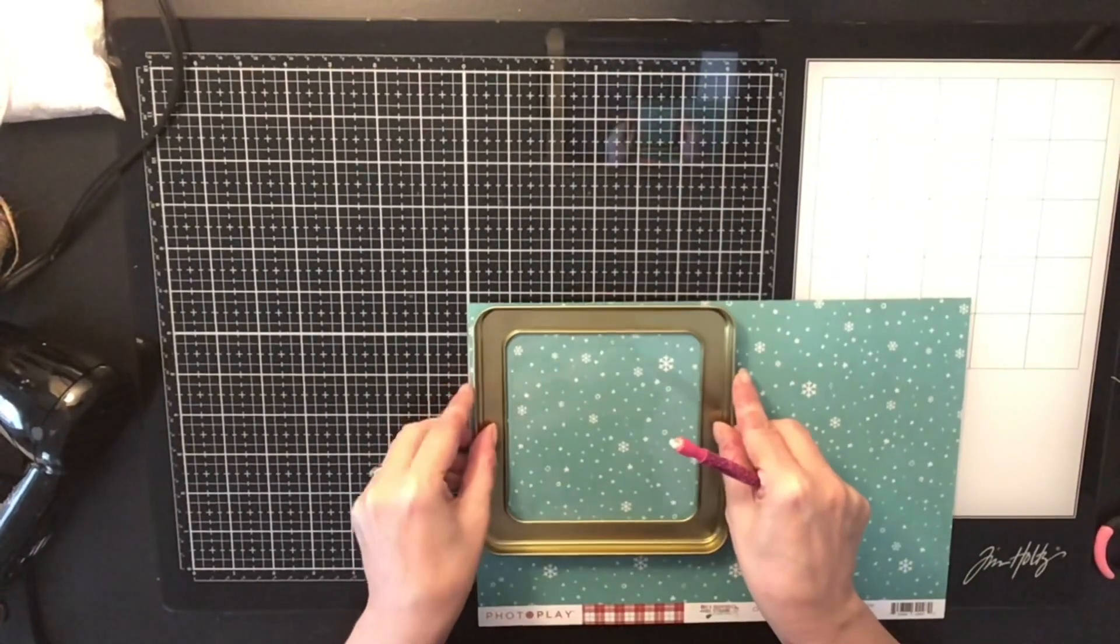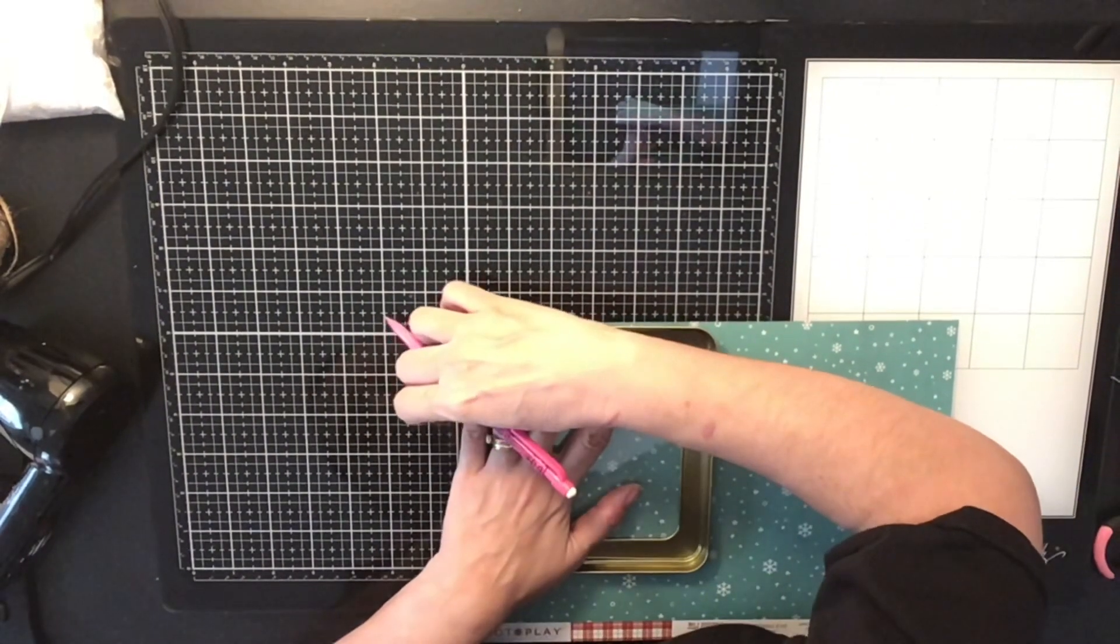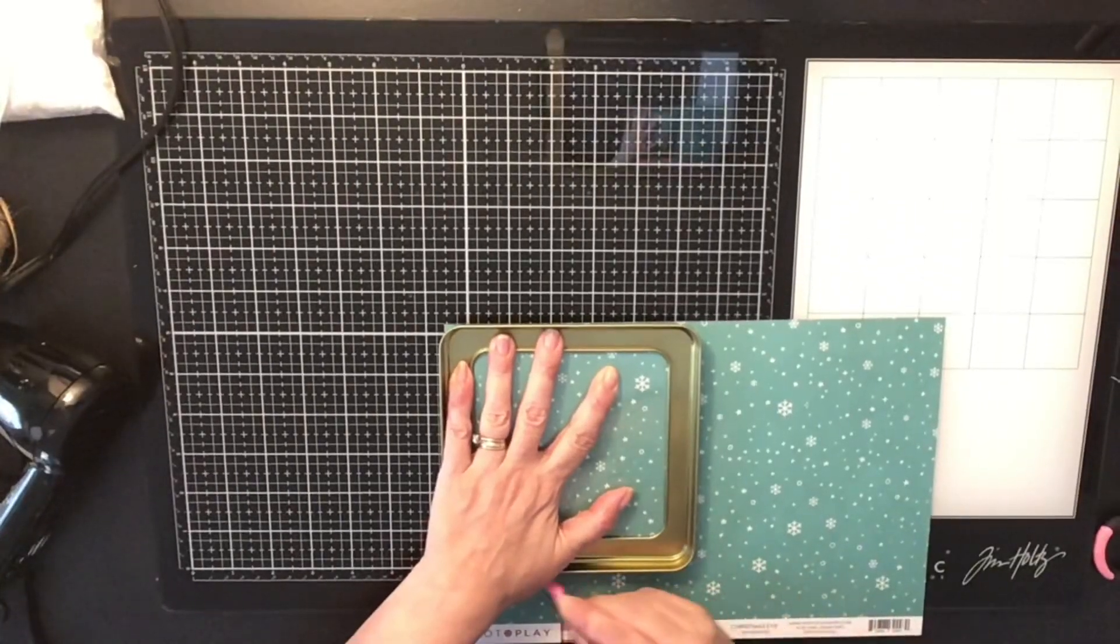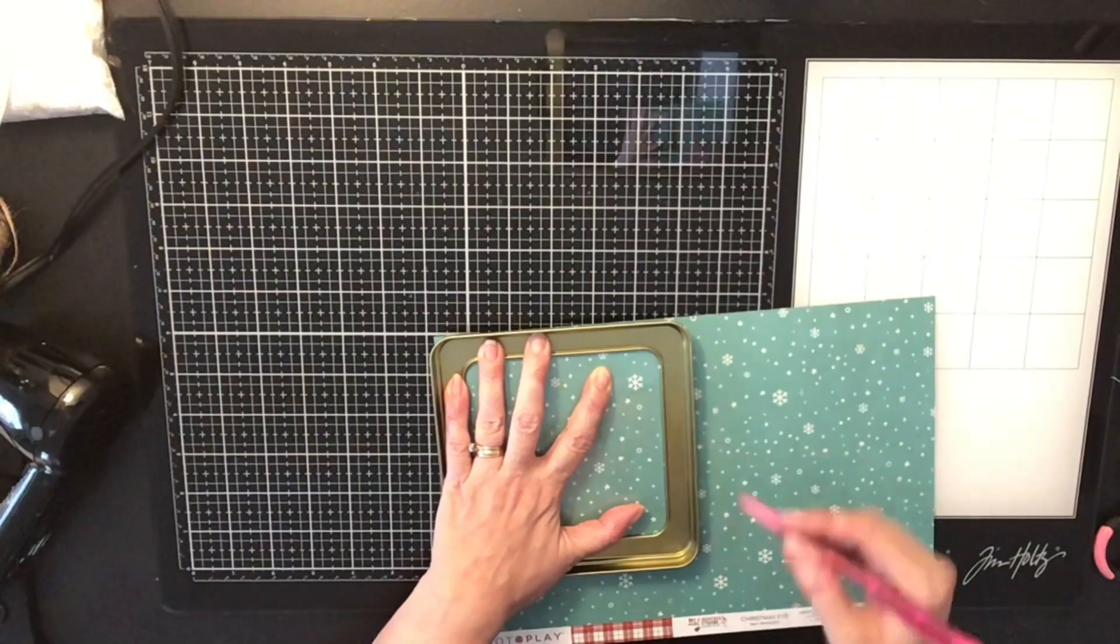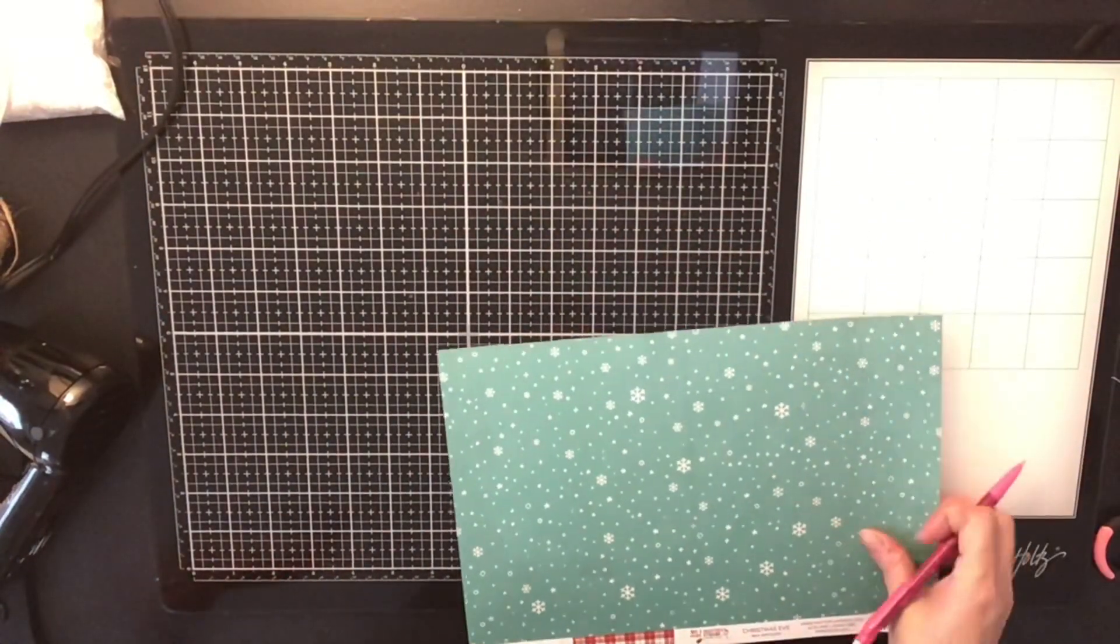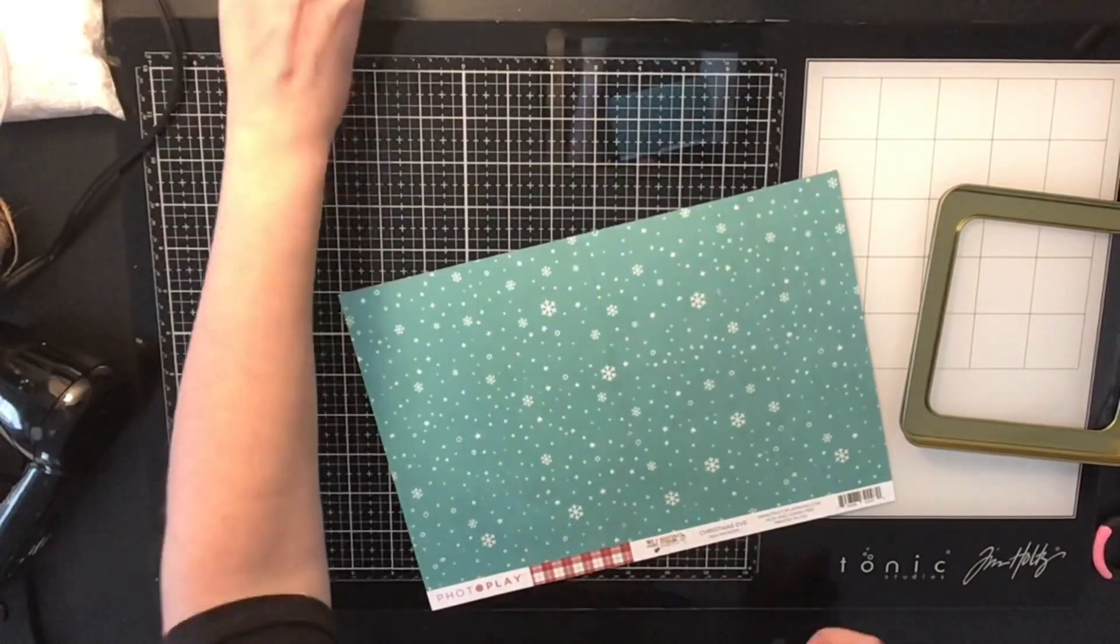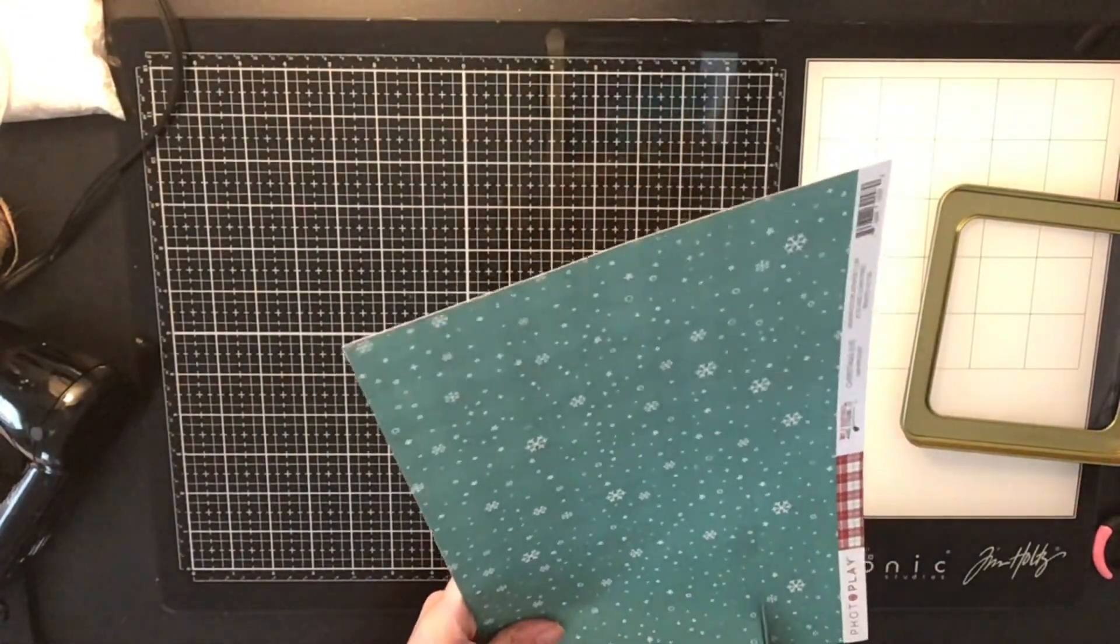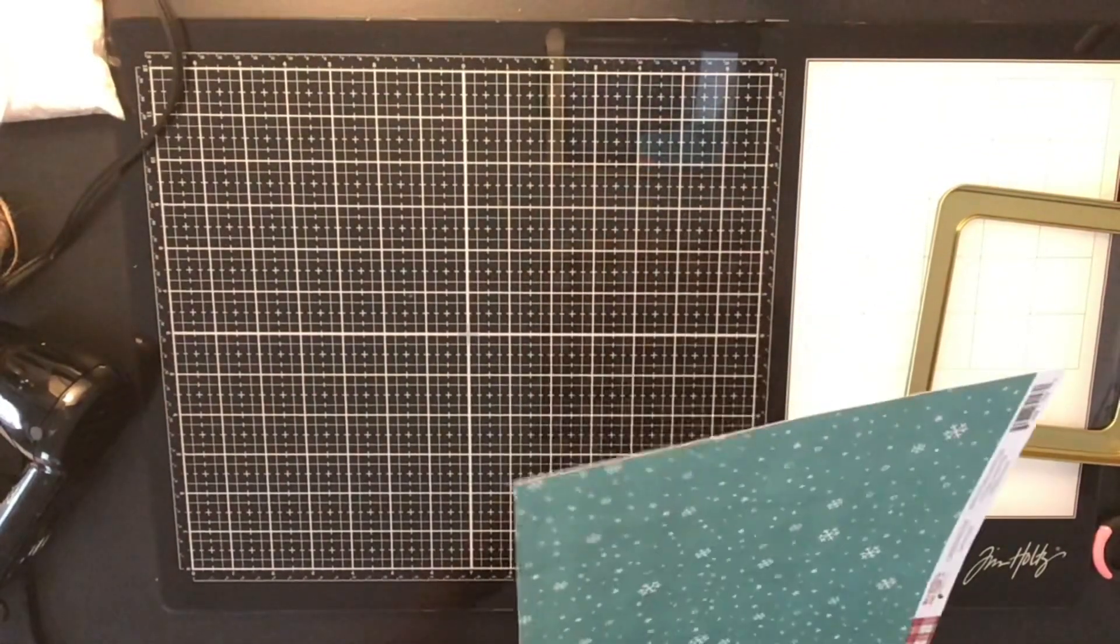So now the way that I make it fit inside the tin is I took my pattern paper which is from PhotoPlay and it has little snowflakes on it. And that's going to be my background. I just turned my tin lid upside down and traced it. And now it'll fit in the tin perfectly. So what I did is I took my scissors and I just cut it out.